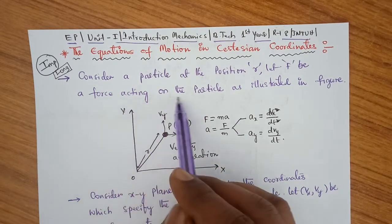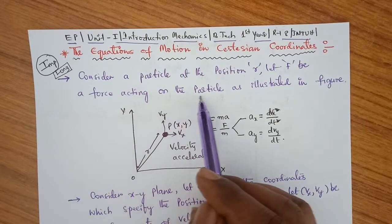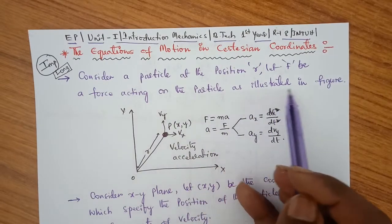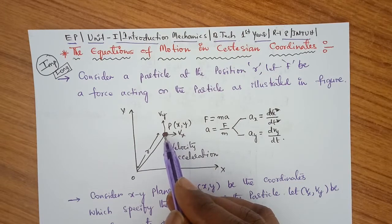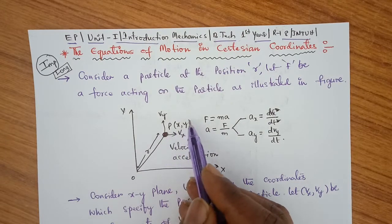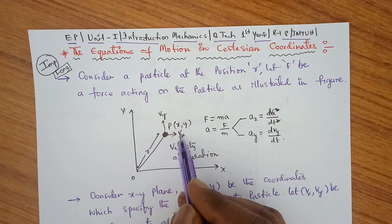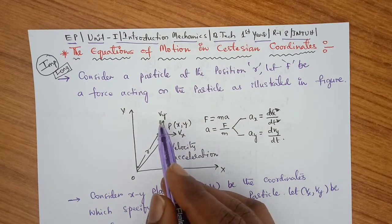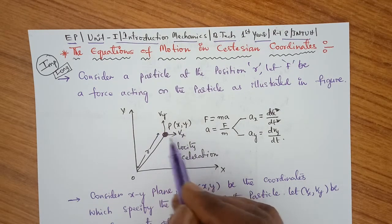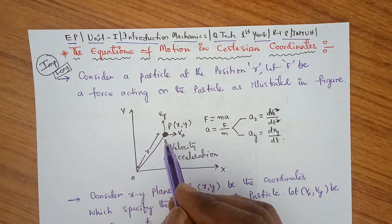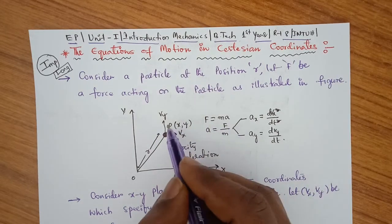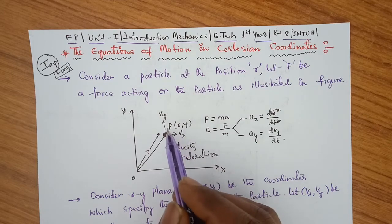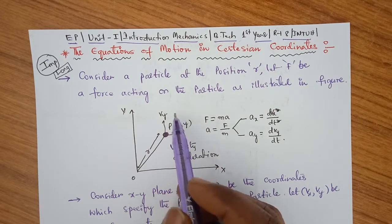When a force acts on a particle, as illustrated in the figure, that particle moves in a particular direction and has some components — that is, X component and Y component — because it is kept in the X,Y plane, so it possesses two velocity components.